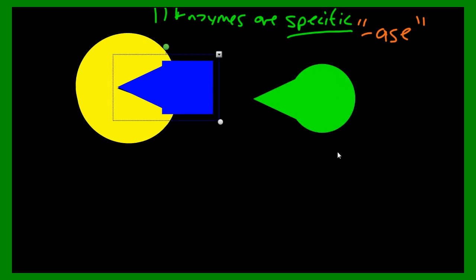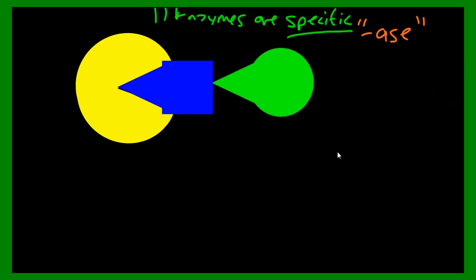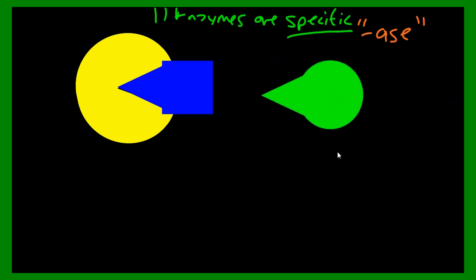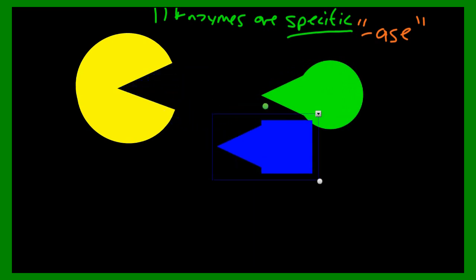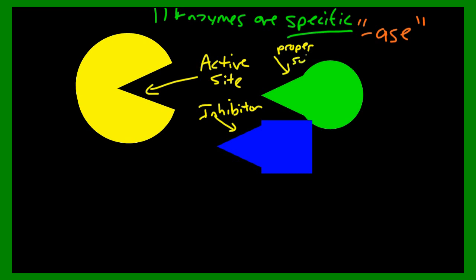This molecule is called an inhibitor. An inhibitor will come in and block the enzyme from working because this substrate can no longer get in to that Pac-Man area. That place where that enzyme is binding to the substrate is called the active site. There's the active site, that's where the bonding is happening. And that is an inhibitor. Some molecules can get in the way of enzymes doing their work with the proper substrates. Those are called inhibitors.